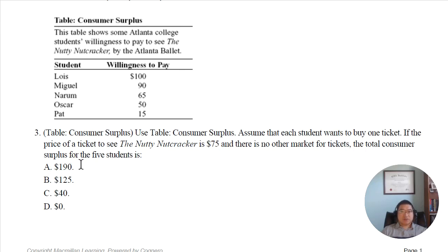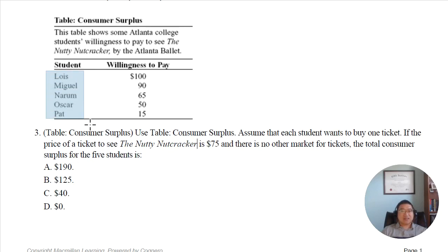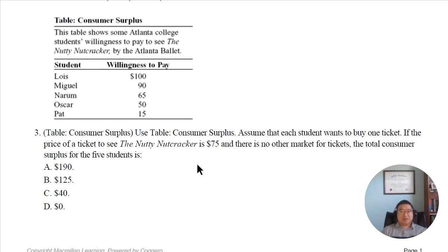We want to know the total consumer surplus for the five students. I don't care what the play is called or exactly who the students are. You look at the first letter: L, M, N, O, P — that's it. We abstract from reality; it just gives you a scenario to set the application. So with price at $75...